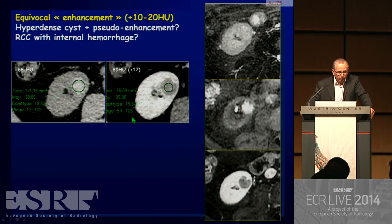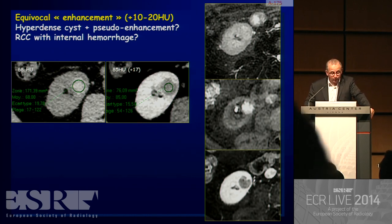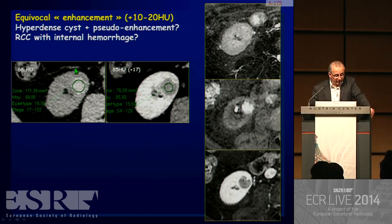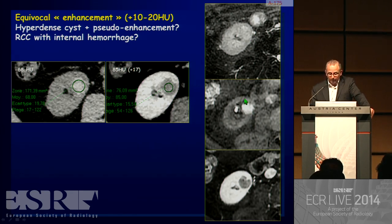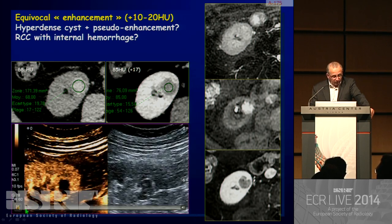In the case of equivocal enhancement, the question is always: is this a hyperdense cyst with pseudo-enhancement, or a renal cell carcinoma with internal hemorrhage? For example, a lesion with baseline 68 HU and 85 HU after injection — in this case, MRI is not conclusive, showing a small heterogeneous pattern on T2 with possible septation after injection. The result was an inflammatory cyst, with no enhancement at the level of the lesion and a small vessel running inside visible with contrast-enhanced ultrasound.